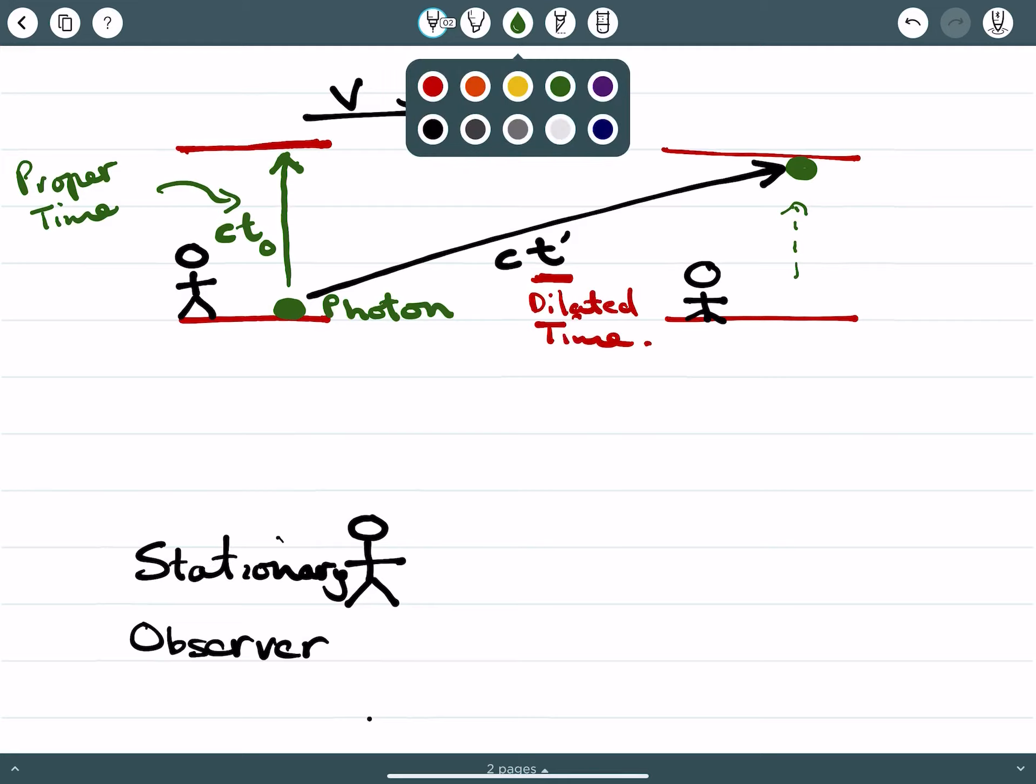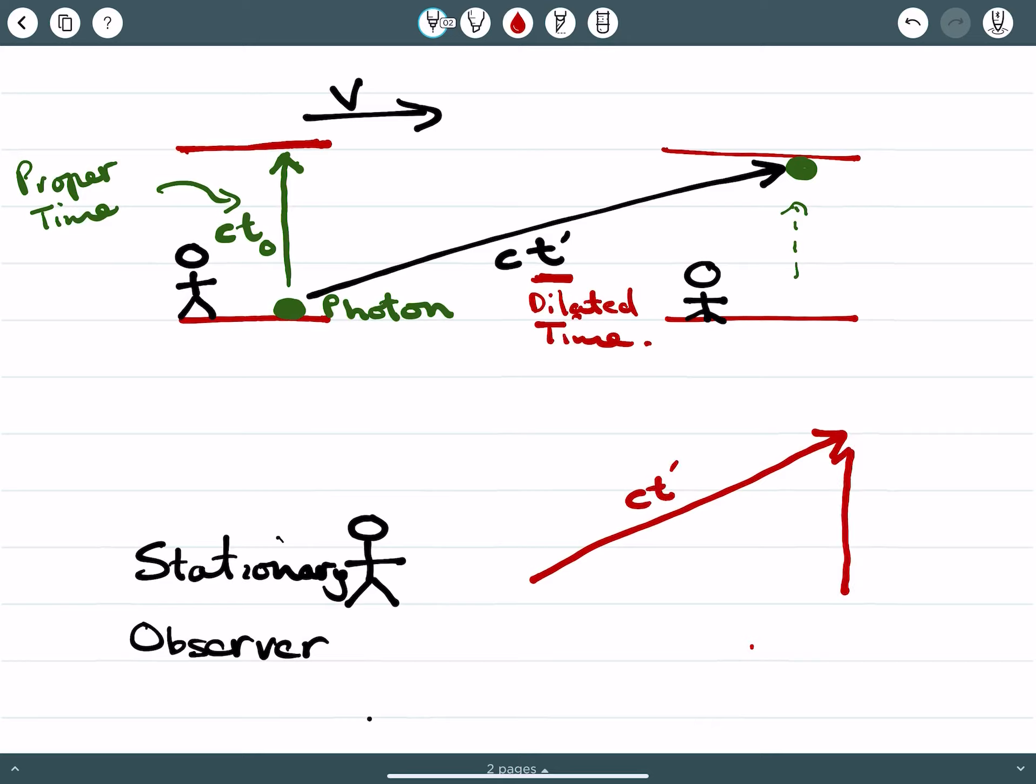Now, what we can do is we can use Pythagoras to be able to distinguish or to be able to find the Lorentz factor. So what we have here is our vectors, and this vector here, horizontal vector, would be given by vt prime, or v dilated time.